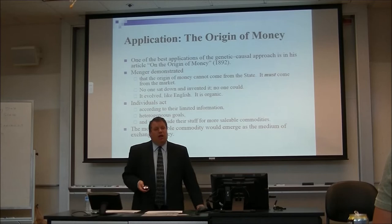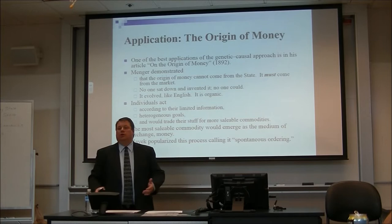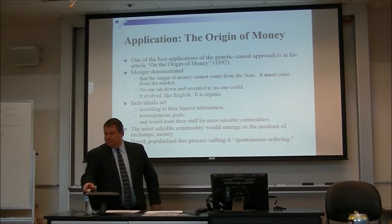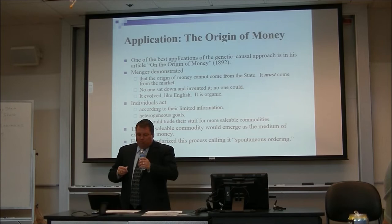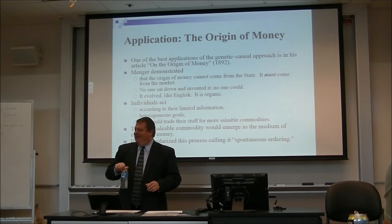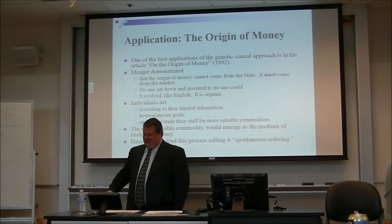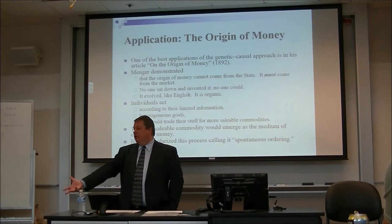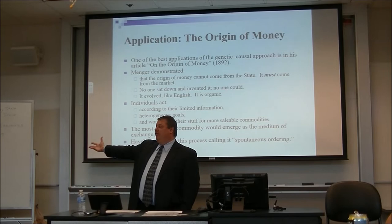The most saleable thing becomes the medium of exchange. Hayek later popularized this by calling it a spontaneous ordering — no one's sitting down designing it, yet this amazingly useful thing, money, emerges. It's the opposite of what you often hear — that money is a public good that must be provided by government. This is 1892. Mises later, in 1912, writes his first book on the theory of money and really expands on the story, but his genesis is in Menger.